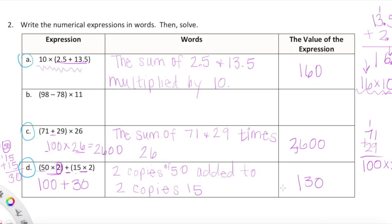So here we have our words and the values of the expressions evaluated. Also, the secret word for today is '50 cents' — as I was working through two copies of 50 cents in part D. Can't wait to practice this with you guys tomorrow. Have a great night!